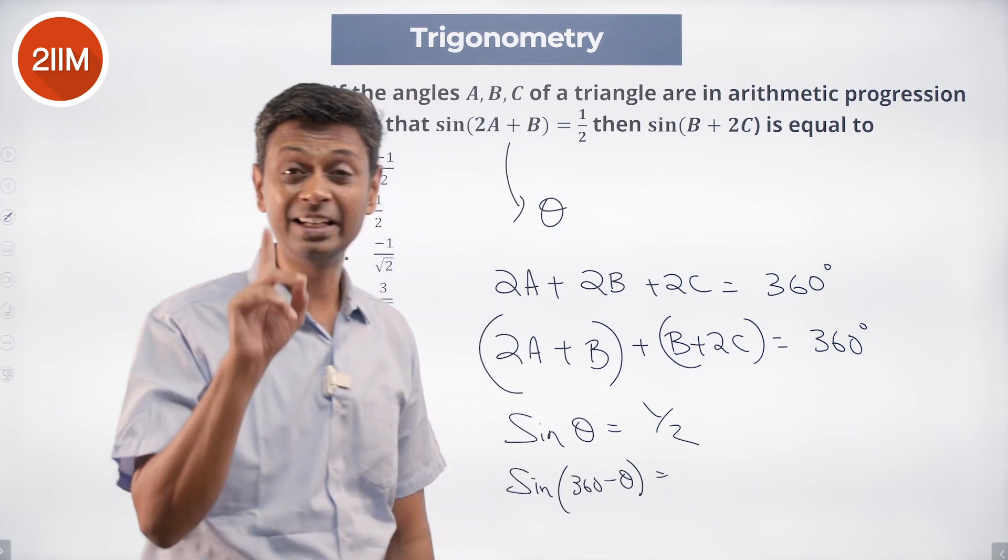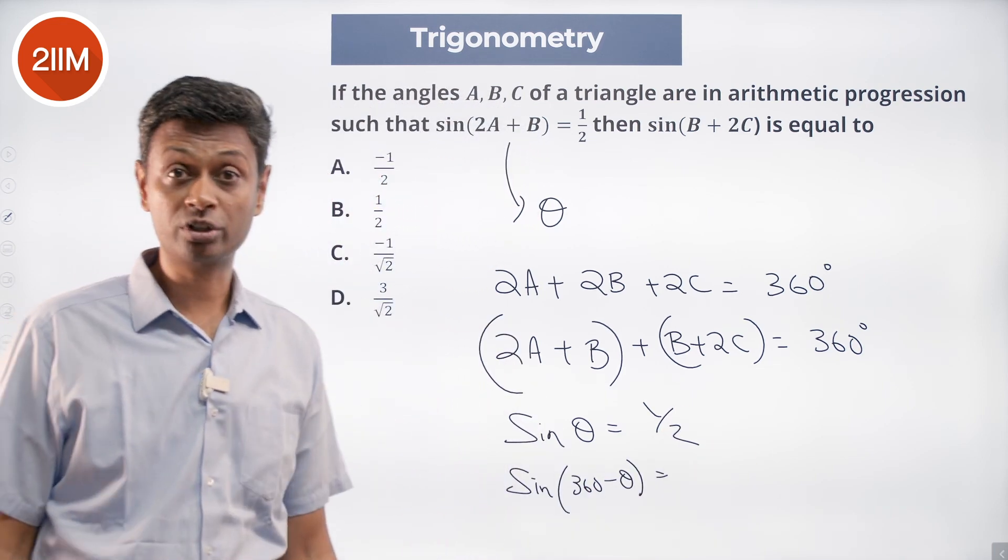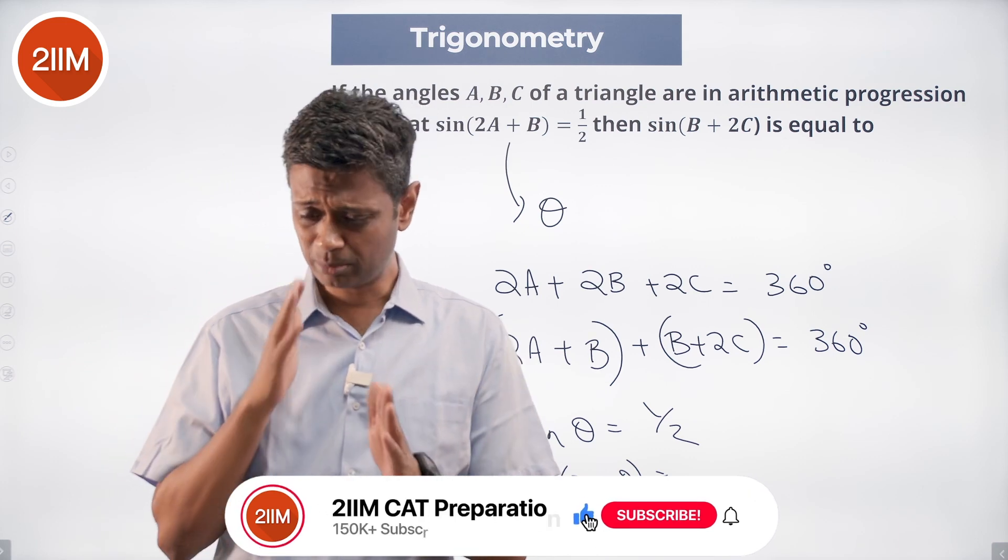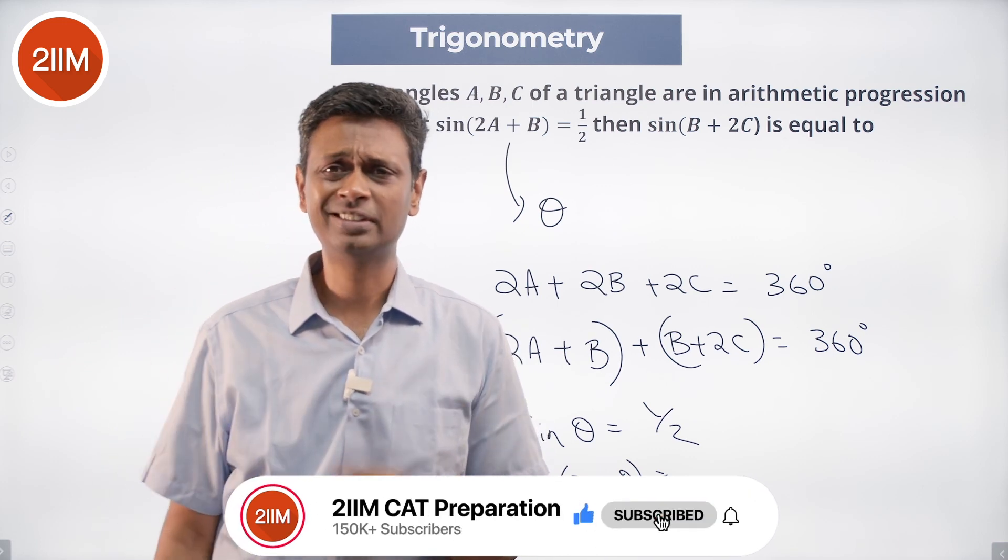We do not even need to know that the angles are in arithmetic progression. Angles being in arithmetic progression tells us that the middle angle is 60 degrees, not even required.